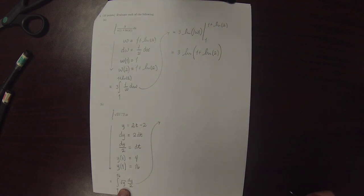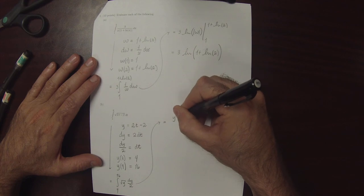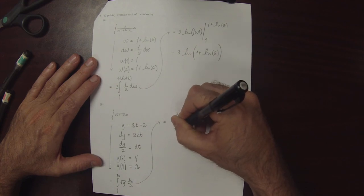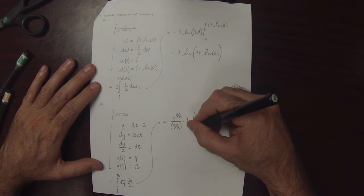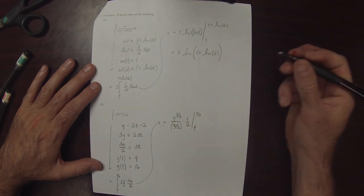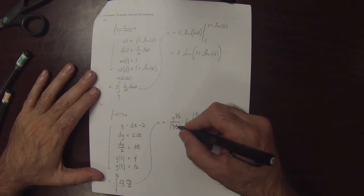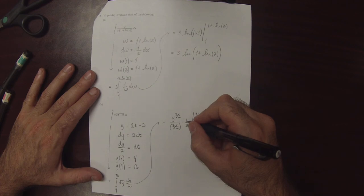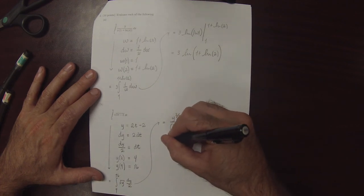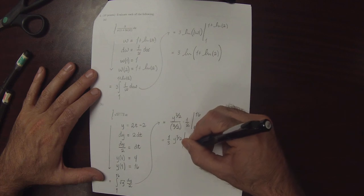Square root of y is equivalent to y to the one half, so we can use the power rule. This gives y to the 3 halves divided by 3 halves, with an extra factor of 1 over 2, evaluated from 4 to 16. Division by 3 halves is multiplication by 2 thirds, and 2 thirds times 1 half is 1 third. So this simplifies to 1 third times y to the 3 halves, evaluated from 4 to 16.